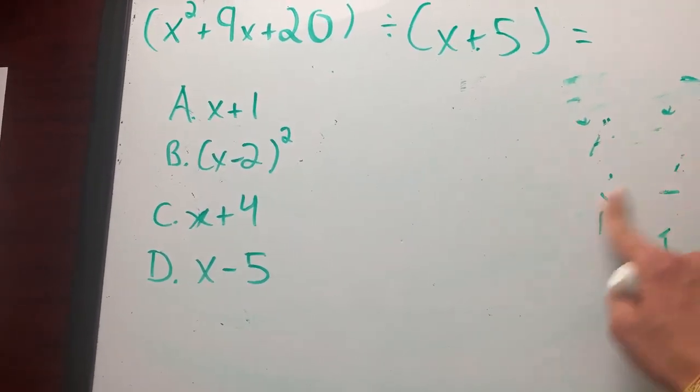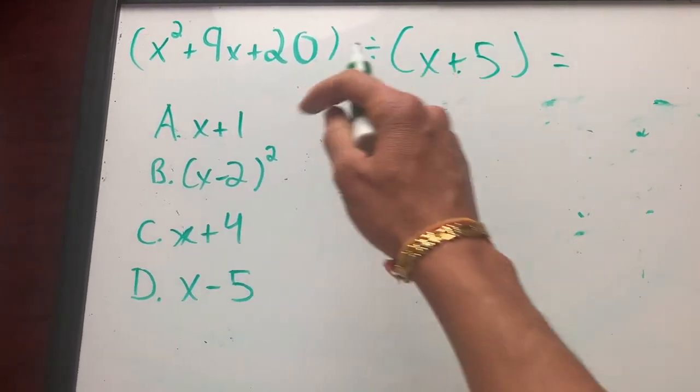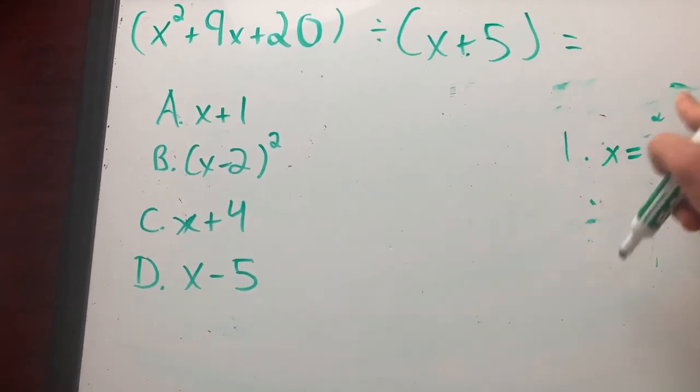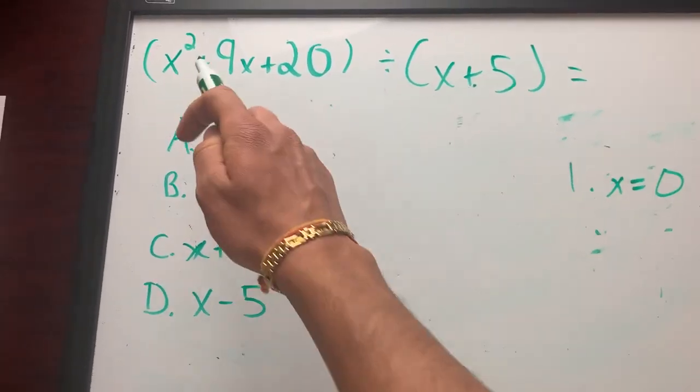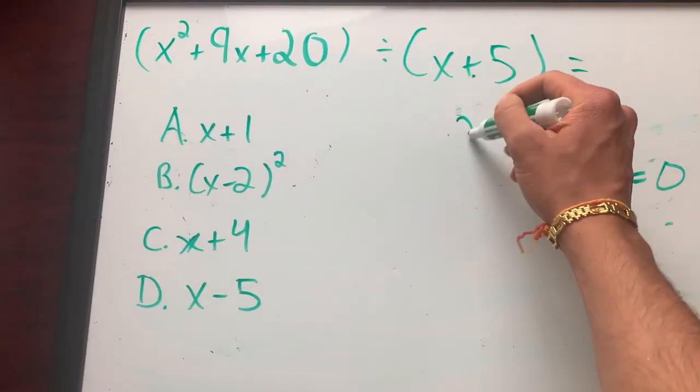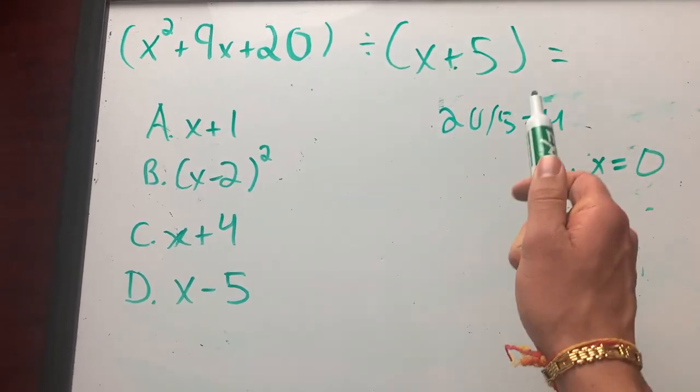So with that in mind, what I'm going to do is I'm going to plug in x equals zero into here. Because always start off with x equals zero. So x equals zero first. So that's zero, zero, 20, zero is five. So 20 divided by five equals four. So if I plug in zero, the out is four.